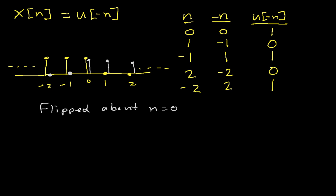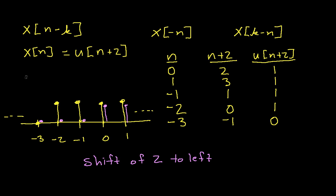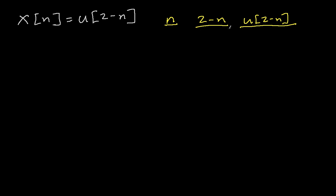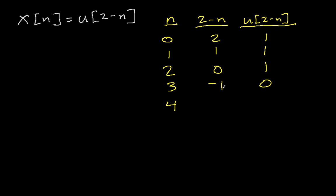Finally, suppose x of n equals u of 2 minus n. Setting up the table with n, 2 minus n, and u of 2 minus n: when n is 0, this is 2, and u of 2 is 1. When n is 1, this is 1, and u of 1 is 1. When n is 2, this is 0, and u of 0 is 1. When n is 3, this is negative 1, and u of negative 1 is 0. When n is 4, 2 minus n is negative 2, and u of negative 2 is 0.